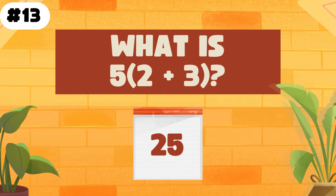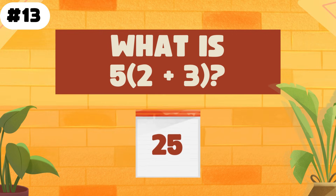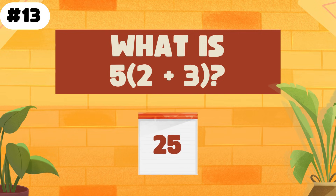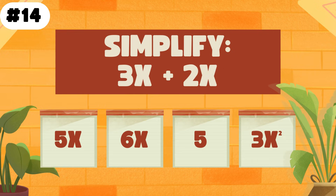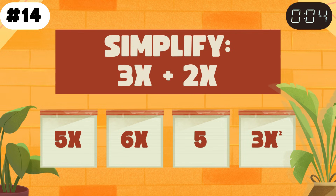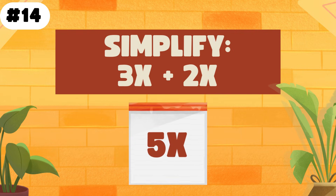By adding 2 plus 5 then multiplying it by 5, you get the correct answer of 25. Simplify 3x plus 2x. The answer is 5x.